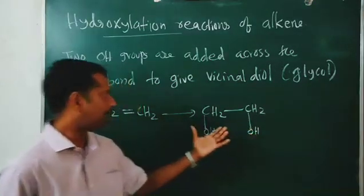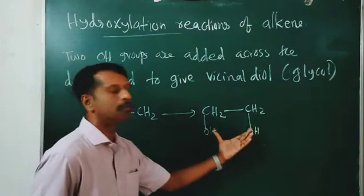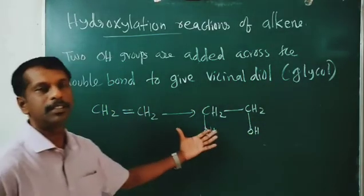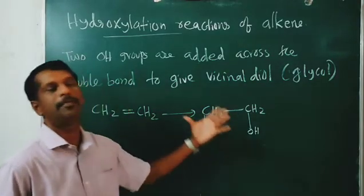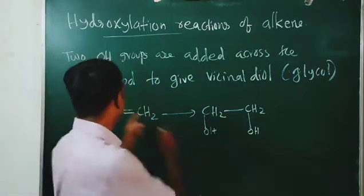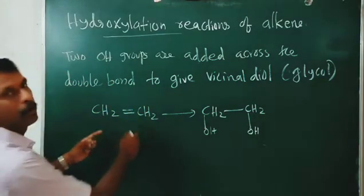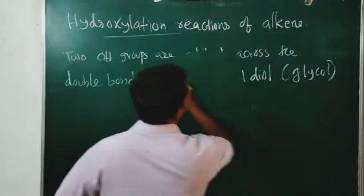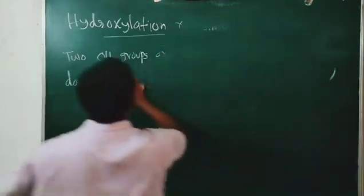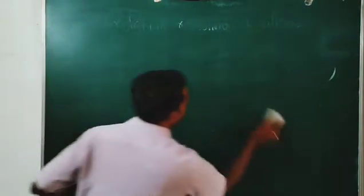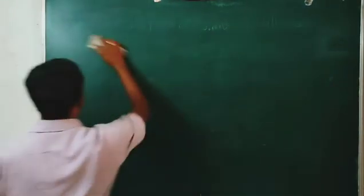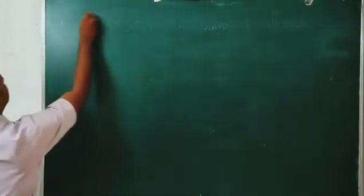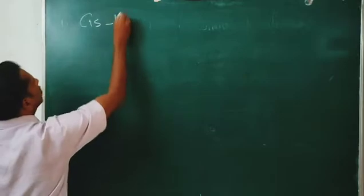This type of reaction is known as hydroxylation reaction. Now, how can we add these two OH groups across the double bond? Let us go through the different methods for hydroxylation — that means adding two OH groups to the adjacent double-bonded carbons. In hydroxylation reaction, the first one is cis-hydroxylation.